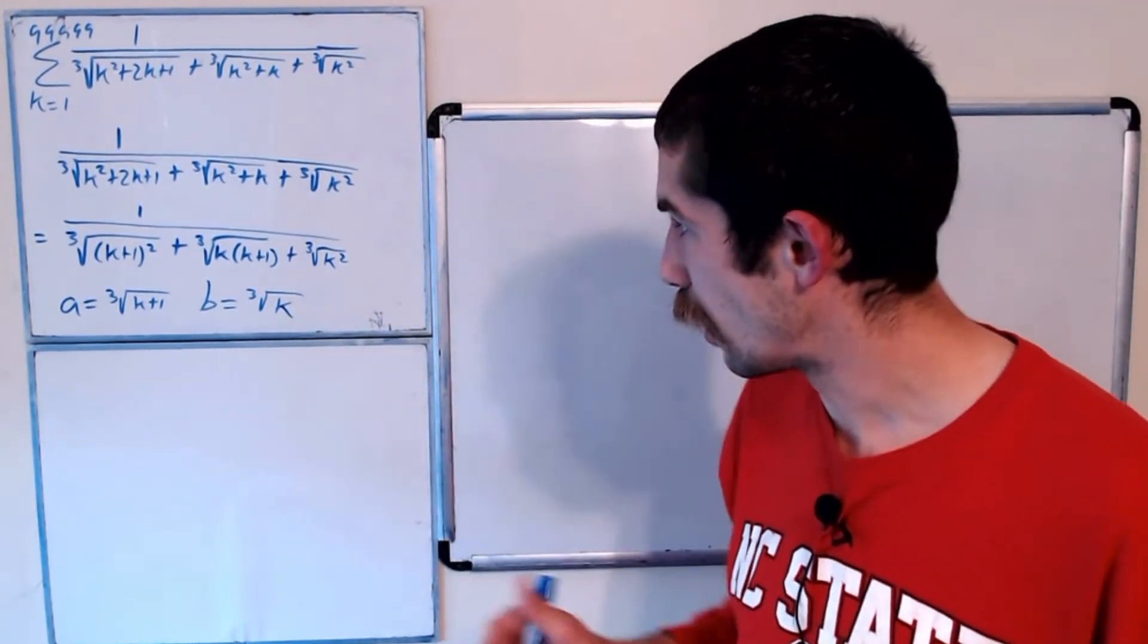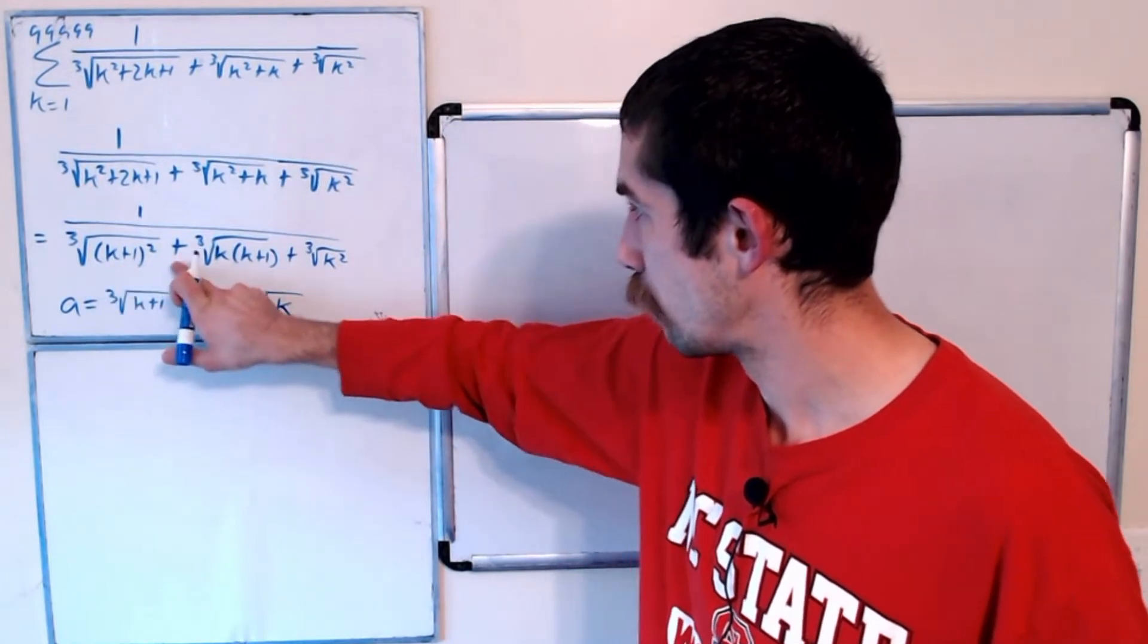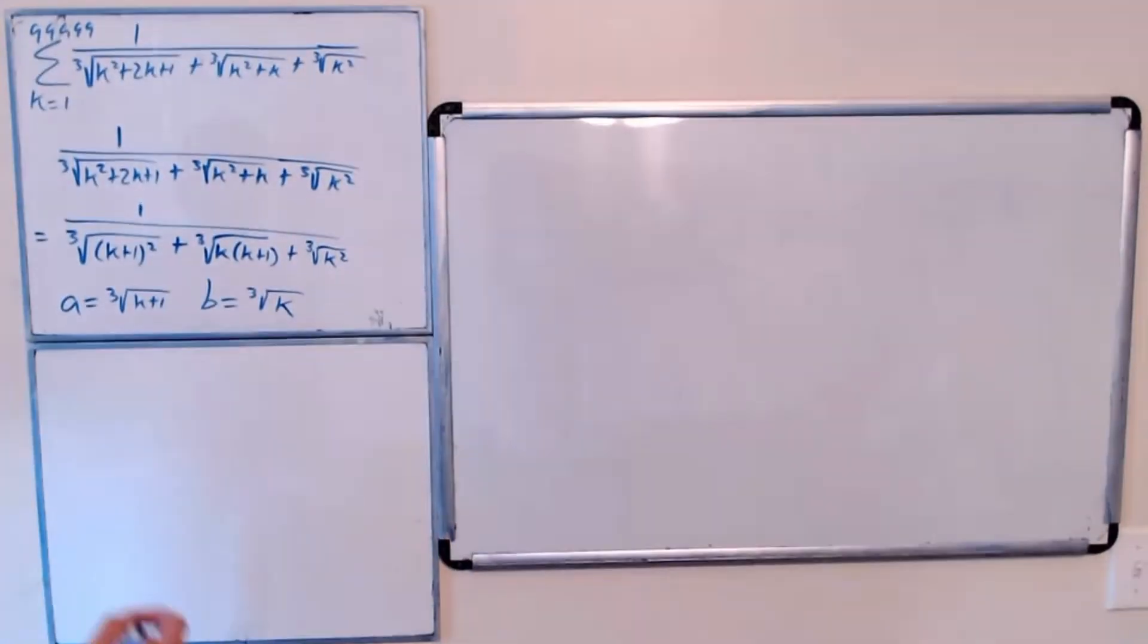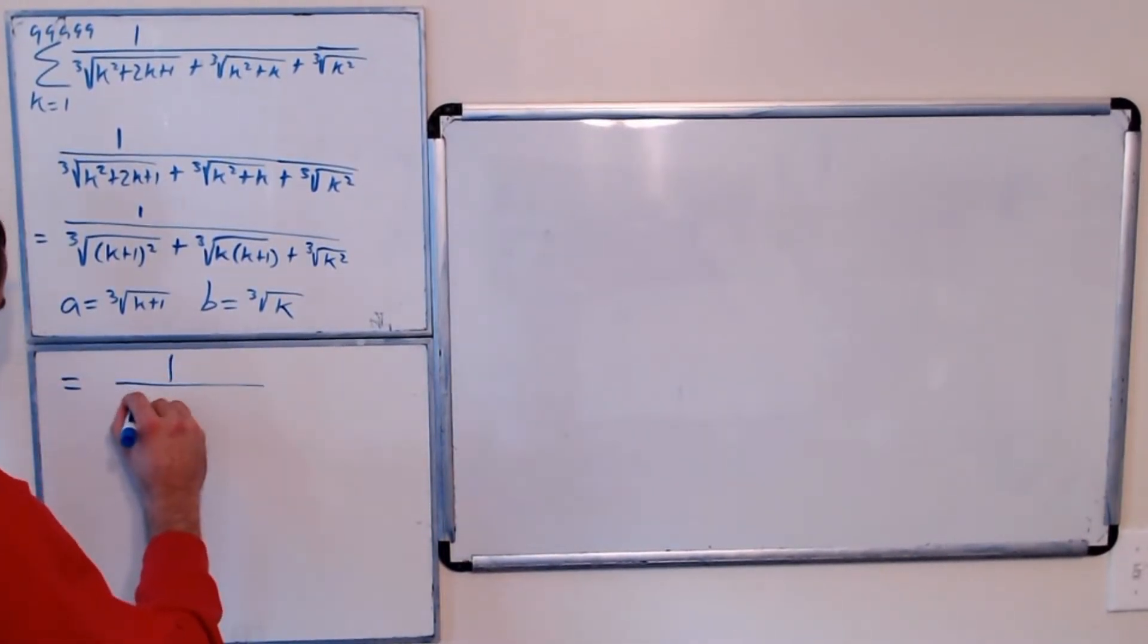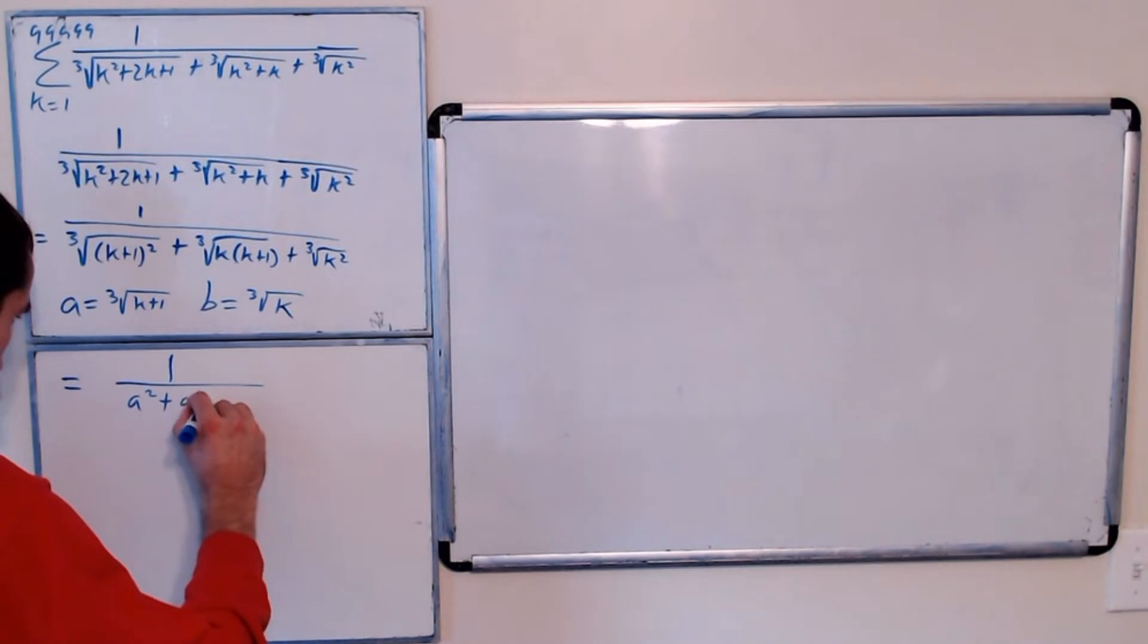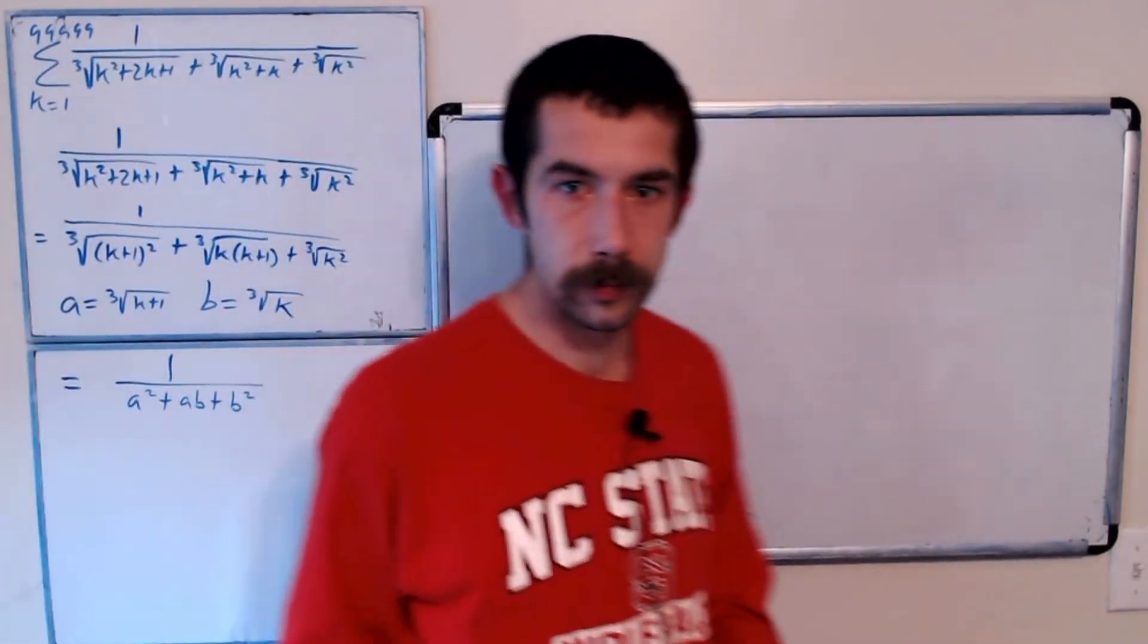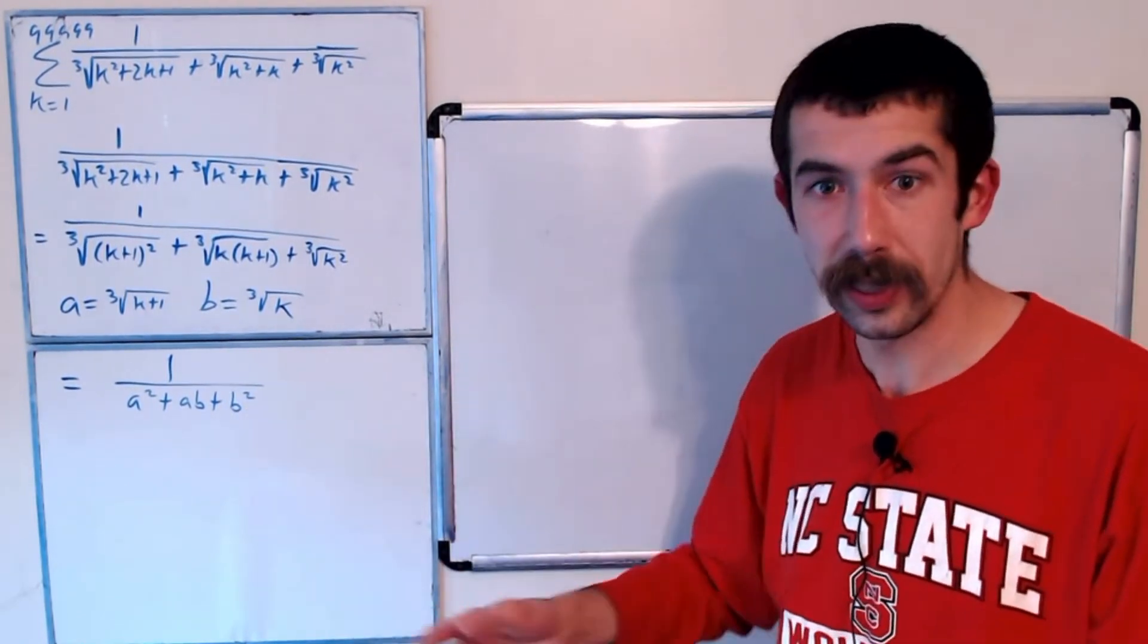And so notice our sum could be written as 1 over, well, this is a squared plus a b plus b squared. And maybe this polynomial of a and b looks familiar to you.